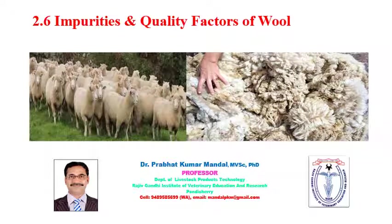Welcome to today's lecture, the sixth lecture on wool. Today's topic is impurities and quality factors of wool. I am going to discuss different kinds of impurities coming with the wool when we get it from sheep or other animals by shearing. The second part covers the factors affecting the quality of wool: the animal or genetics aspect, the nutritional or feeding aspect, and the environmental aspect.